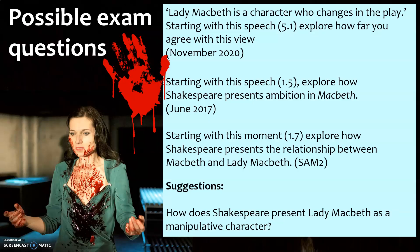Here are some possible exam questions — you might want to pause and have a look. The top three are either sample or real questions from recent years. For example, a November 2020 question asked about her as a character who changes, which she absolutely does. I'd recommend taking the next step: put a timer on, give yourself 15, 20, or 30 minutes — or even the full 50-minute timing — and practise a question. In your beginning paragraph, discuss how the character appears and analyse a quote; in the middle, look at whether there's a change; and in your final paragraph, contrast the beginning with the end to show the character's progression.